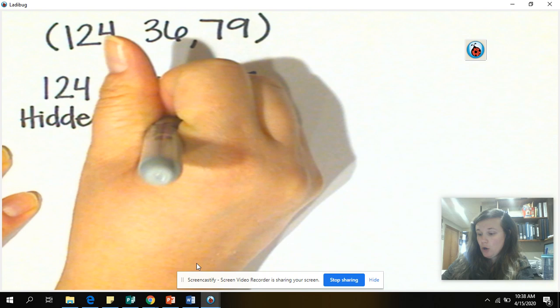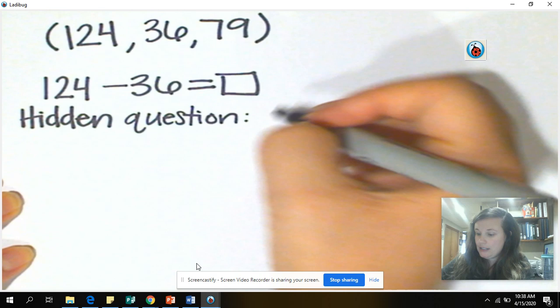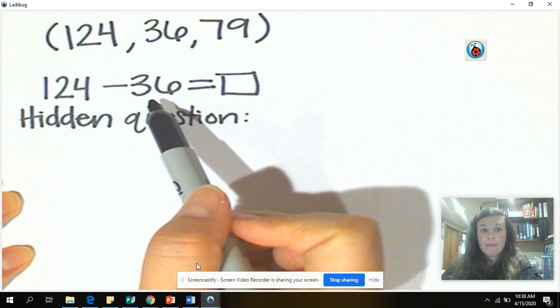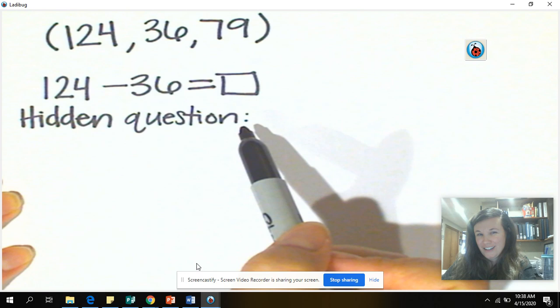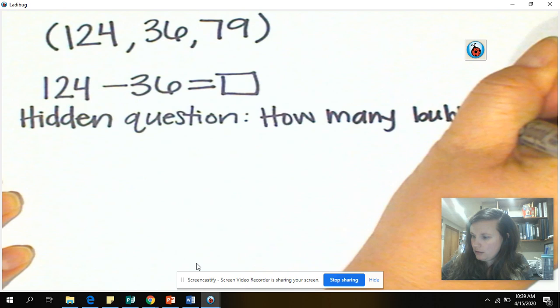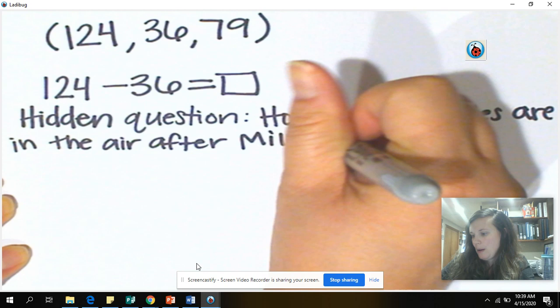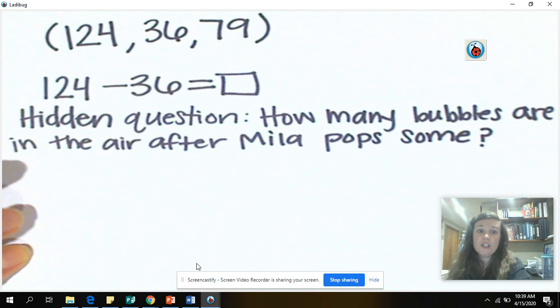Now remember, a hidden question means we have to solve for this before we can answer the final question of how many bubbles are left in the air. So the hidden question here is, remember, I started with 124 bubbles in the air and Mila popped 36 of them. So the question would be: How many bubbles are in the air after Mila pops some? We need to know that question because we can't answer the final question without knowing that part of the story.